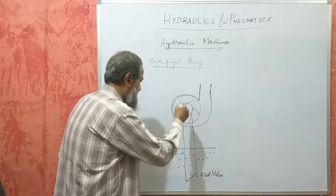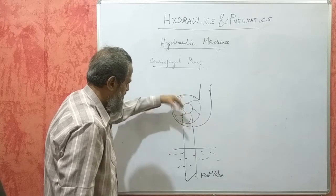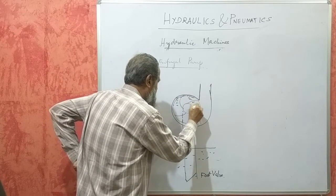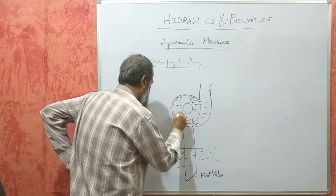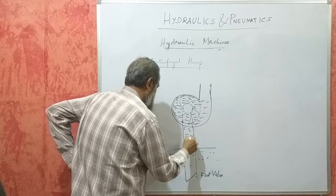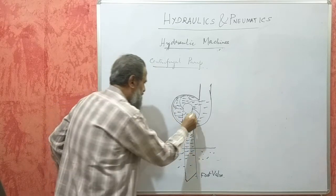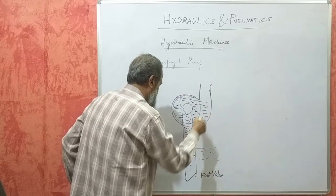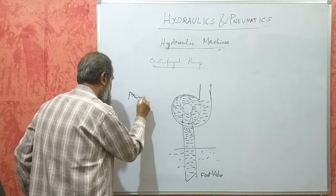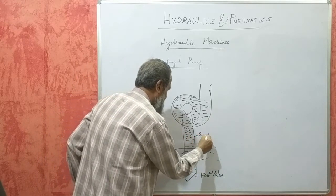Before starting the pump — which is coupled to an electric motor that converts electrical energy into mechanical energy and supplies it to the impeller — we must make sure that the casing and the suction pipe are filled with the liquid. There must not be any cavity. Otherwise vacuum will not be created. Filling the casing and suction pipe with liquid is what we call priming.